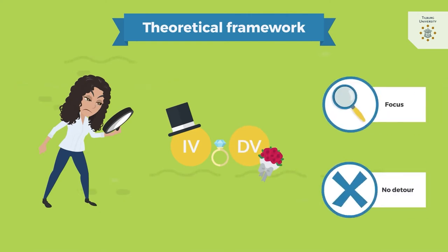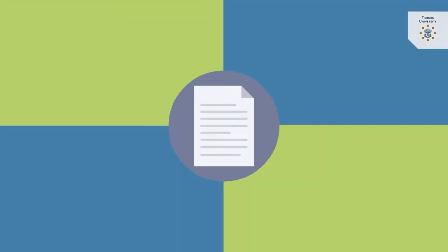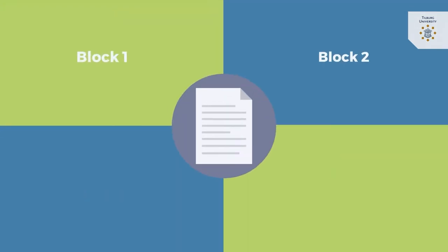No detour, no additional information. Just like the introduction, the theoretical framework has four blocks. In our example, each block is a paragraph.